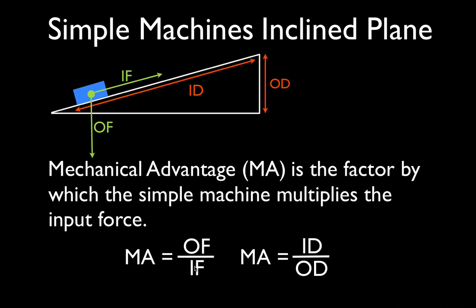Now you'll notice that we have both of the forces together. So we have output force, input force, and input distance, output distance. We keep the forces together and the distances together.